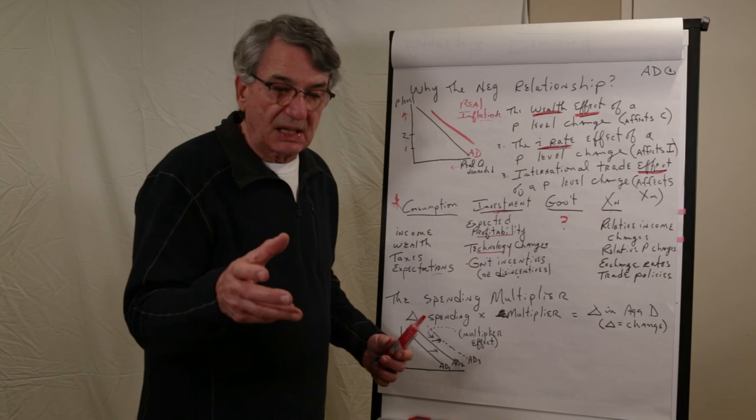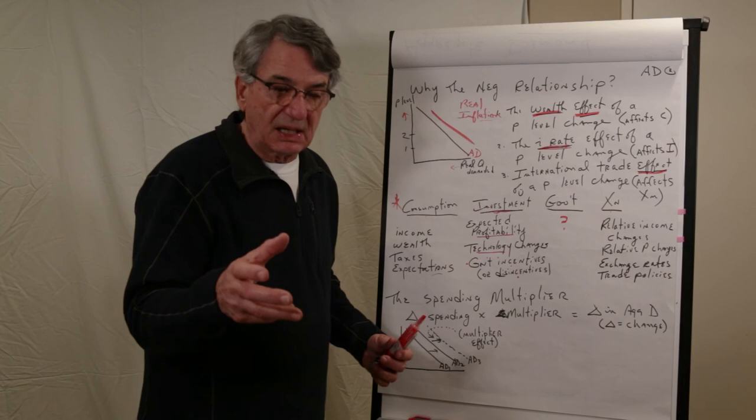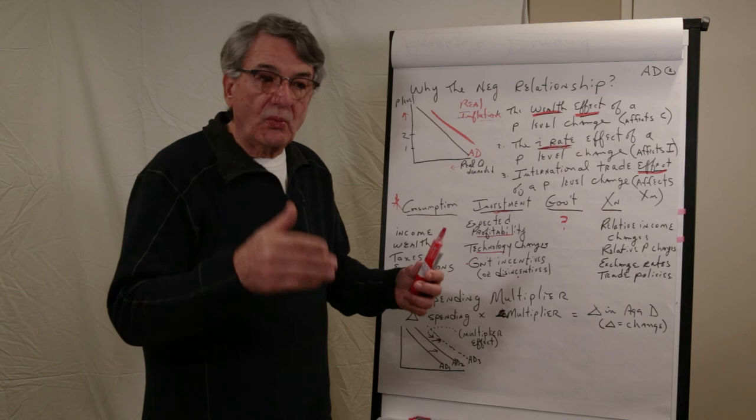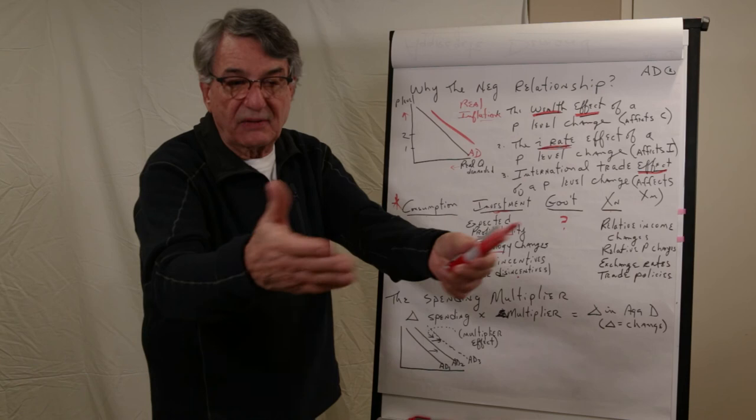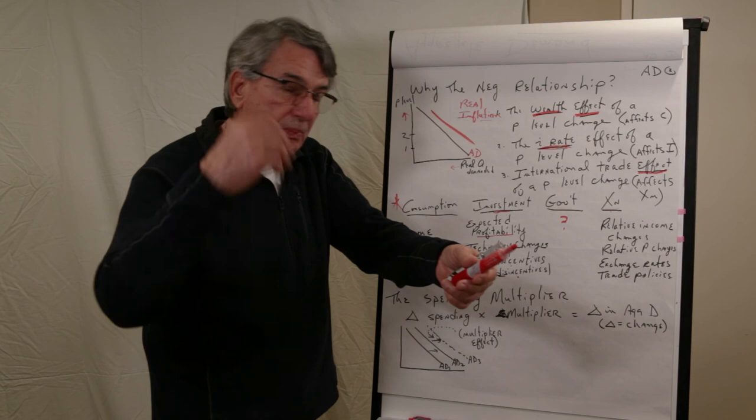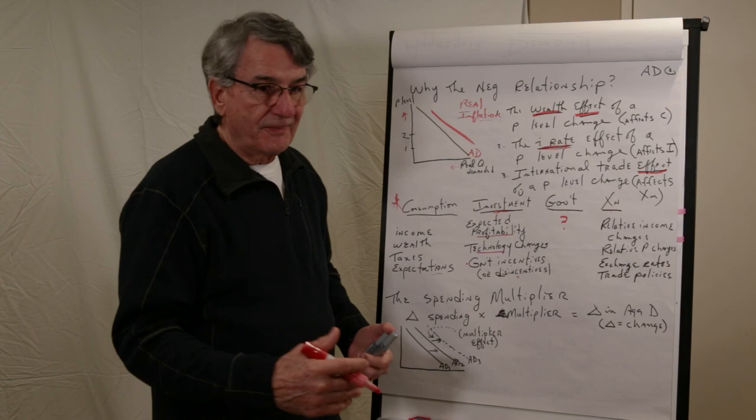...when a dollar gets spent. See, I raid my grandma's mattress. And she's got $10,000 there. And I go and spend it. And I buy trinkets and bling and so forth with it. When I spend that $10,000, that becomes income to whoever sold me the stuff and got the money. With that income, that person will go and buy something else. And then those people will take that money and go and buy something else, which means money is spent and re-spent and spent and re-spent.